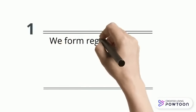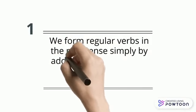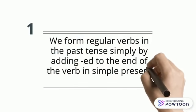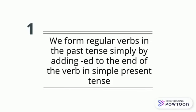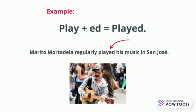We form regular verbs in the past tense simply by adding ED to the end of the verb in simple present tense. For instance, play plus ED becomes played, as in: Marito Mortadela regularly played his music in San Jose.